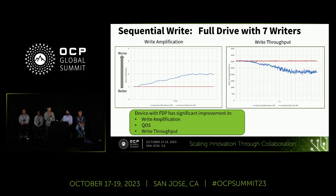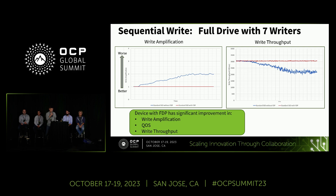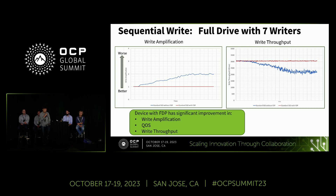Why does this happen? Because these writers, even though they are sequential individually, are actually very much random to the drive — it's like the drive is taking seven writers simultaneously and their placements get mixed and interleaved together. With FDP, the seven writers can each be assigned to different super blocks by assigning them to different placement handles, or reclaim unit handles (RUH). This separates the workloads into multiple super blocks, each owning their own area on the drive, minimizing WAF and maintaining performance.